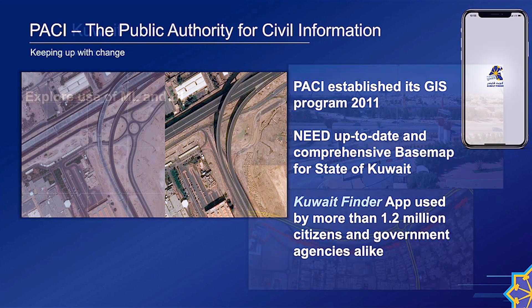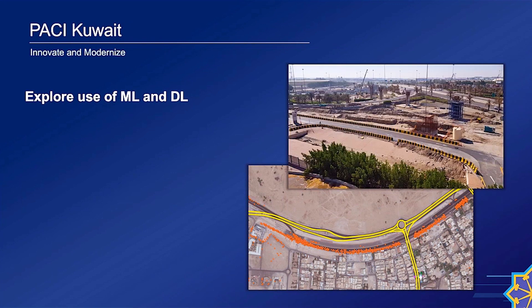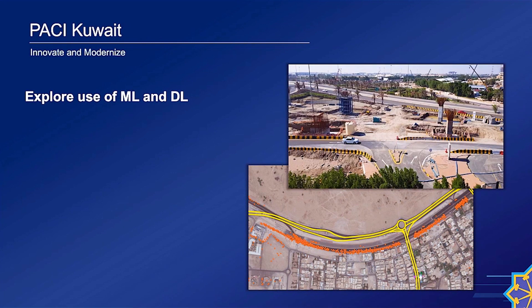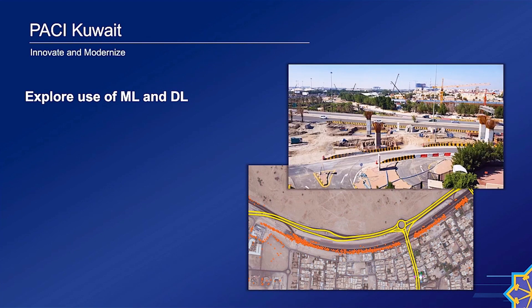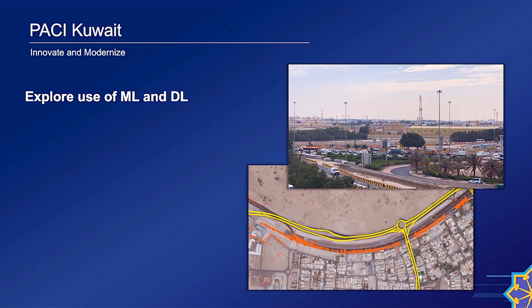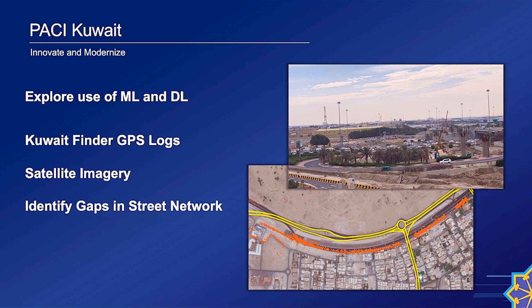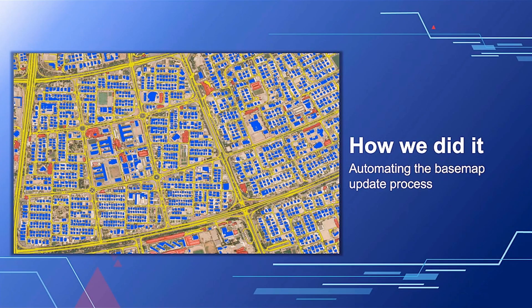We have recognized the need to modernize our business process to update the GIS data, starting by exploring how we can use machine learning and deep learning to do this. We analyzed Kuwait Finder GPS logs and satellite imagery in order to identify gaps in our street networks and GIS data. Let's see how we did it.